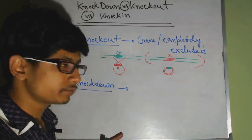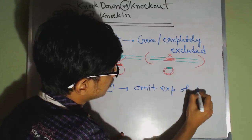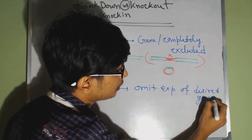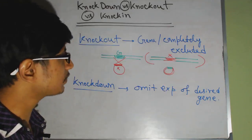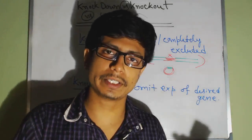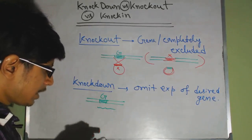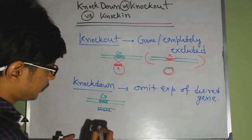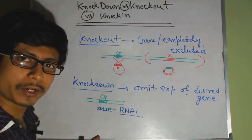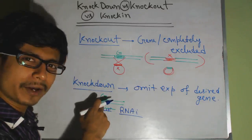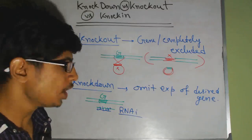The second term is knockdown. In knockdown, the idea is the same — we want to omit the expression of a gene — but we do not completely knock it out. The gene is still present in the cell. The way knockdown works is by producing a complementary RNA to the RNA of that gene. We use RNAi technology — RNA interference — where small RNA fragments are complementary to the target gene's RNA and cause its degradation, so protein expression from that gene is prevented.